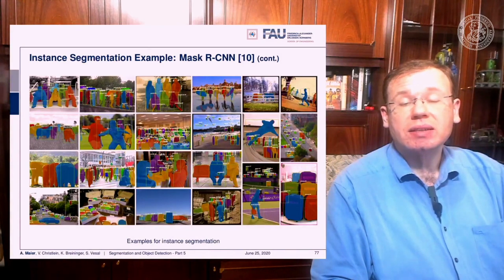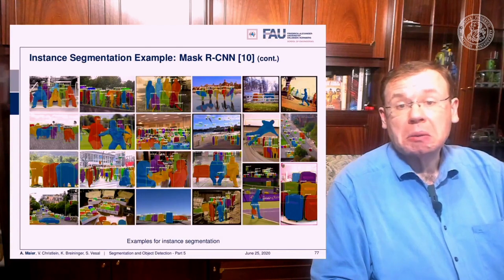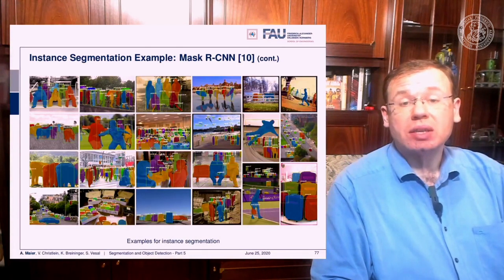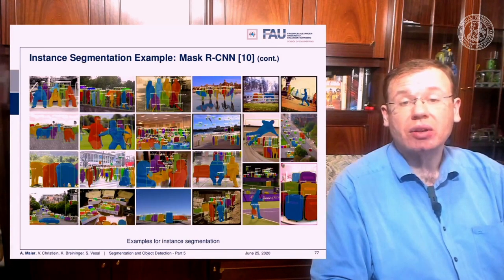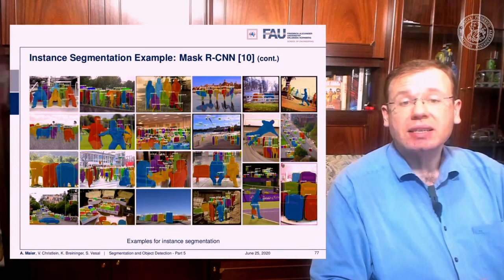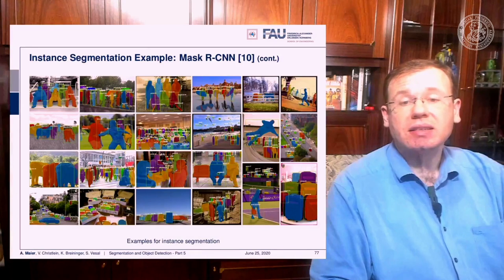Let's have a look at some examples — these are results from Mask RCNN, and these are quite impressive results. There are really difficult cases where you identify where the persons are and also show that the different persons are different instances. So very impressive results.